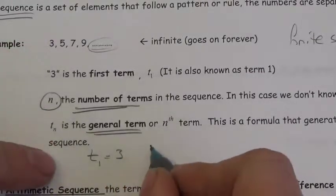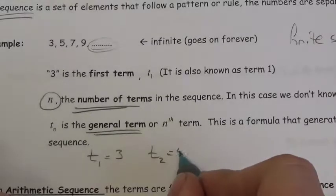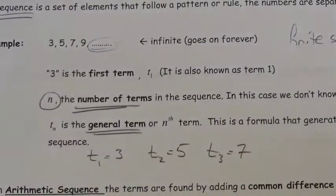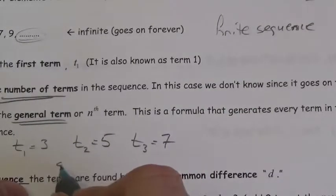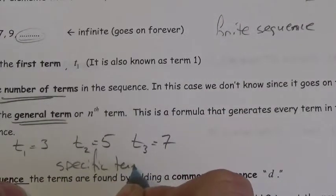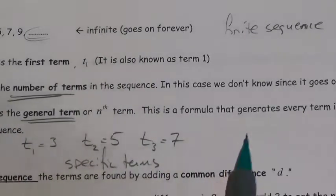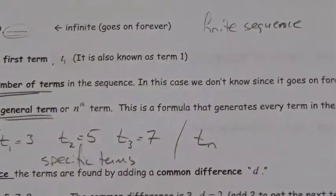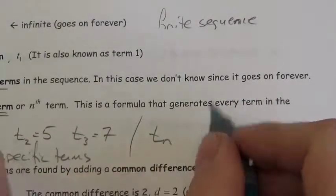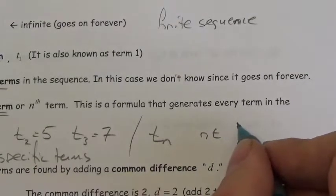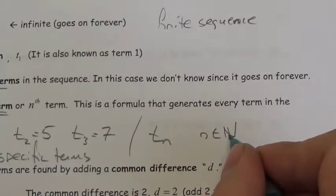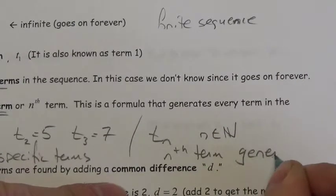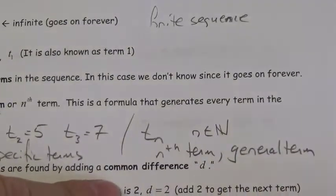So in this case, T₁ equals three, T₂ equals five, T₃ equals seven, and so on. These are all specific terms. As soon as I put a specific number as the subscript, I am referring to a specific term in the sequence. If I put an N as the subscript, N can be any number — in this chapter, N is an element of the naturals, our counting numbers. This is the Nth term or general term, which describes how the sequence behaves rather than a specific value.